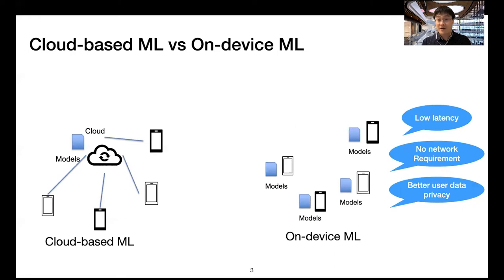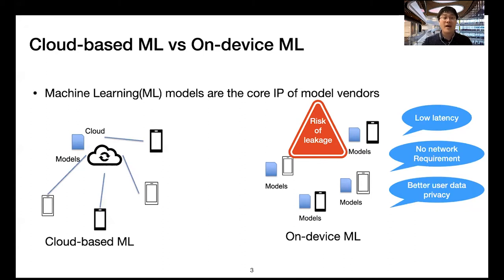However, on-device machine learning has a risk of leakage for the machine learning models. Machine learning models are the core IP of model vendors, which makes it a serious privacy problem for machine learning models.